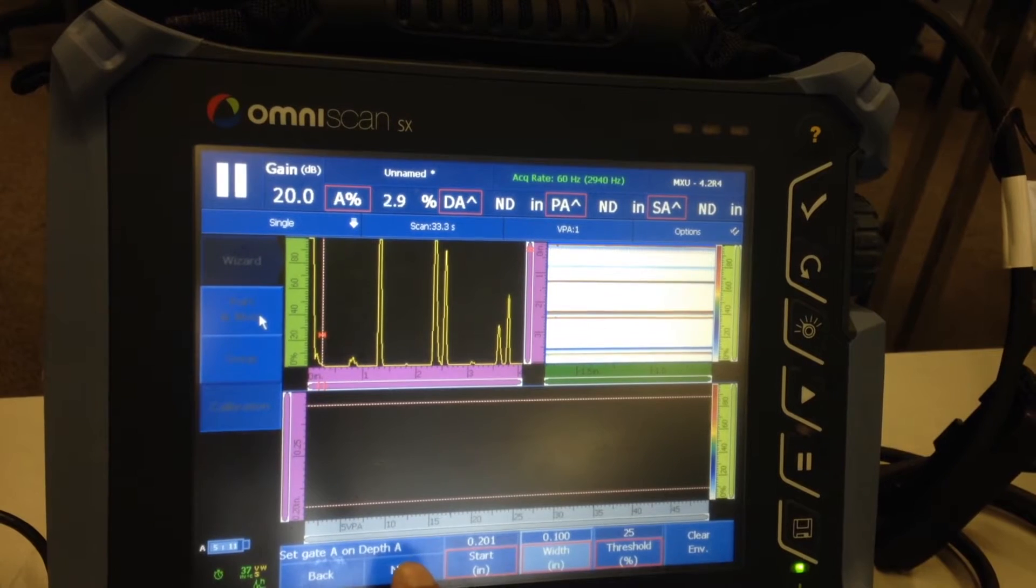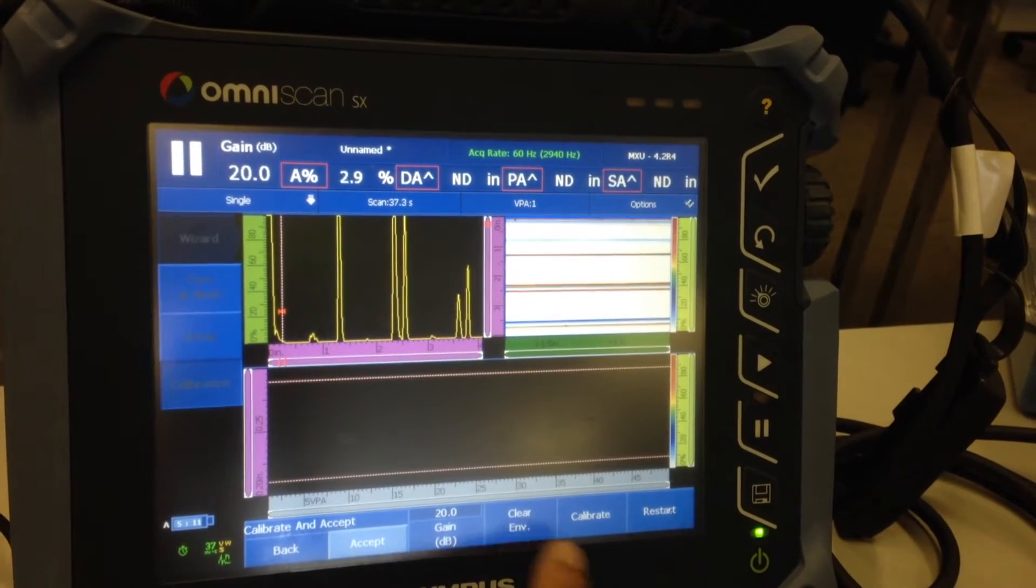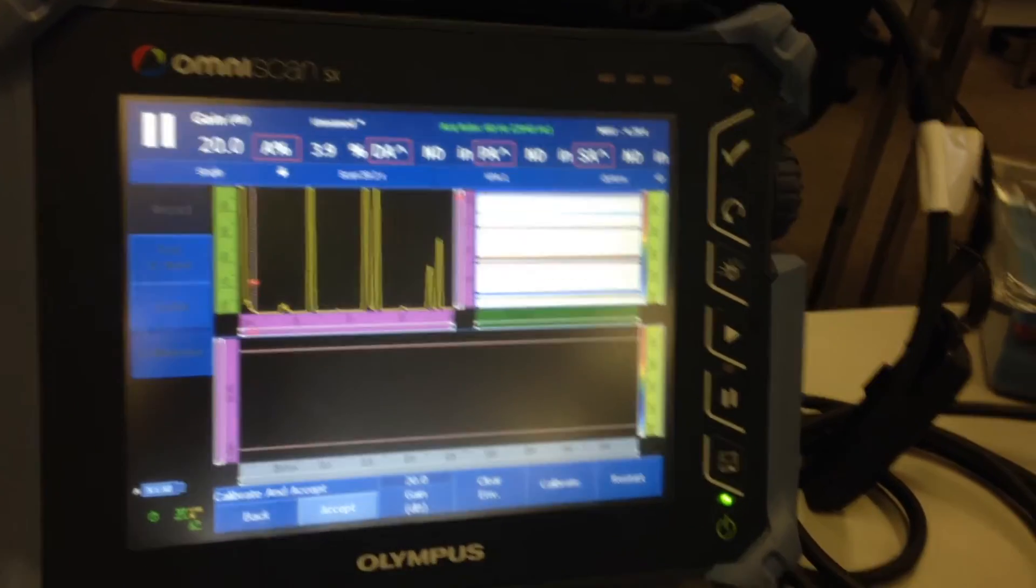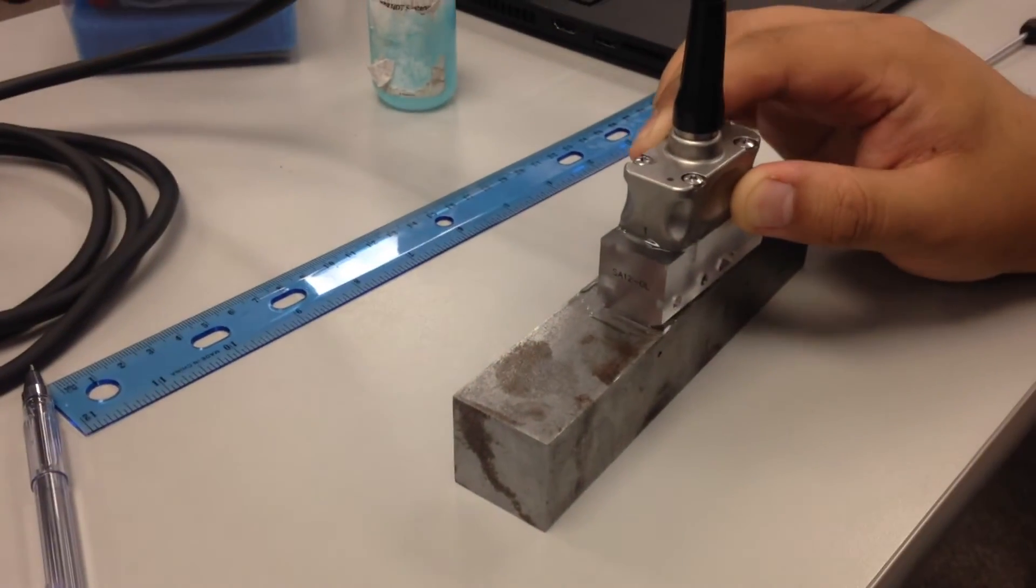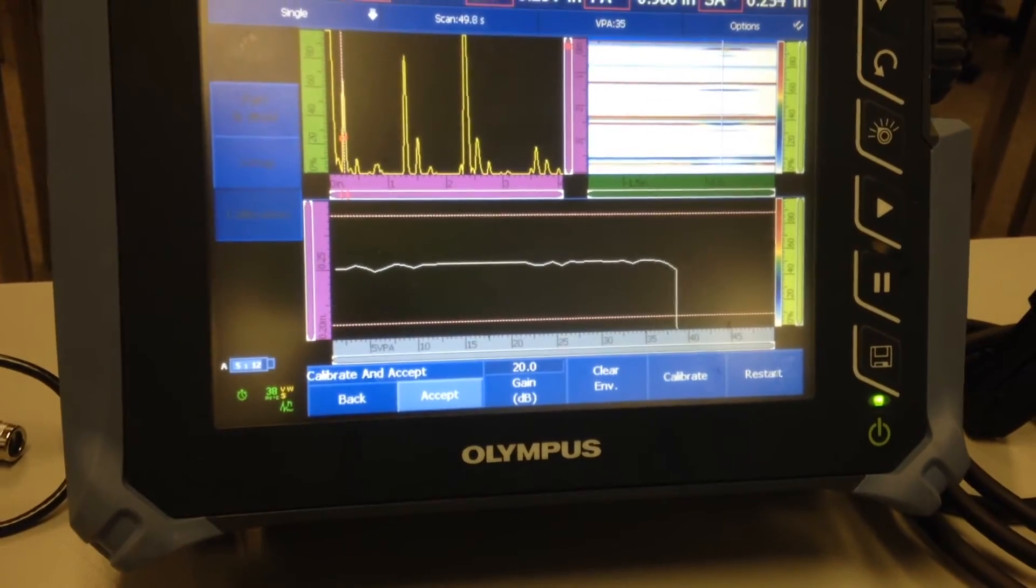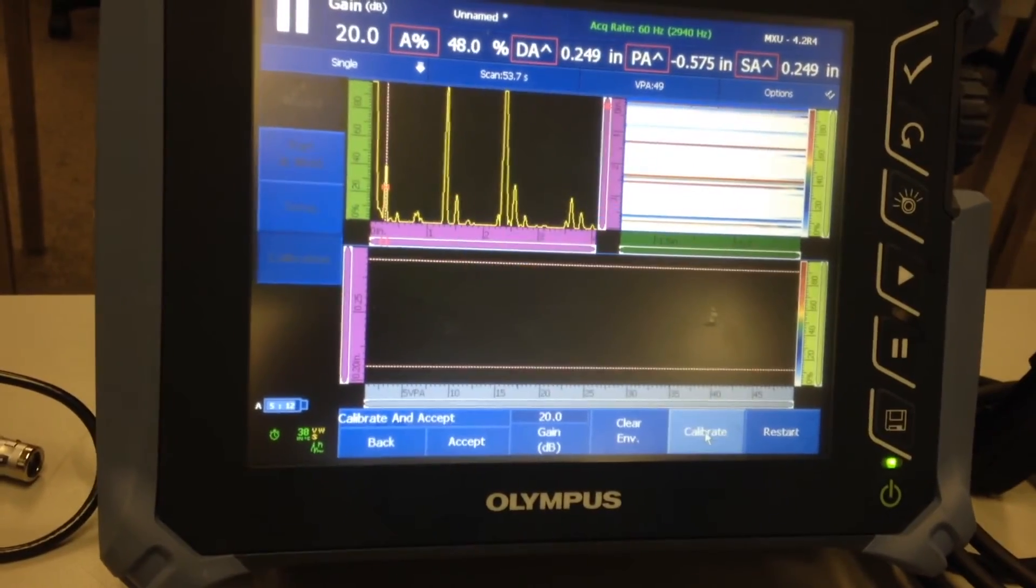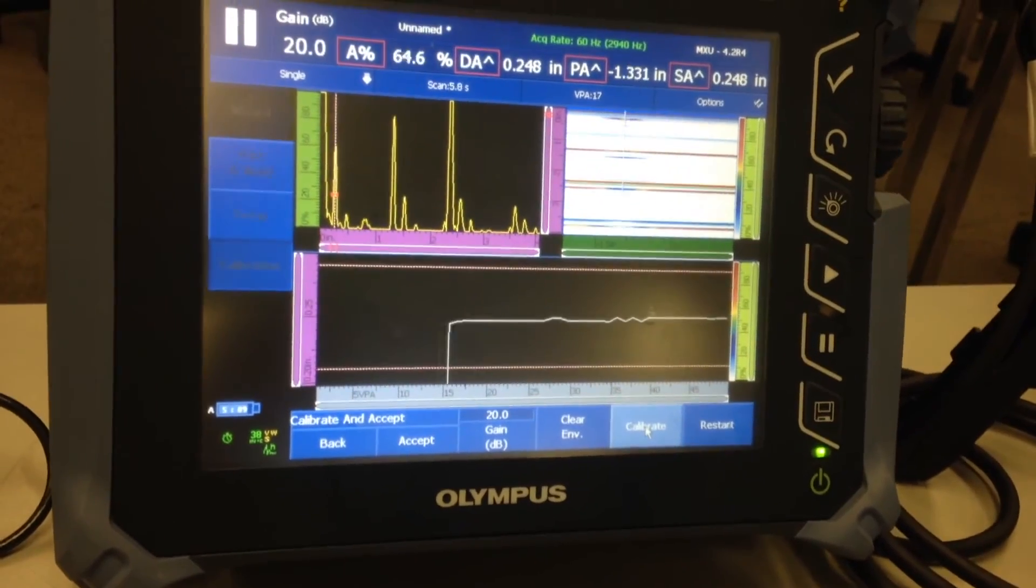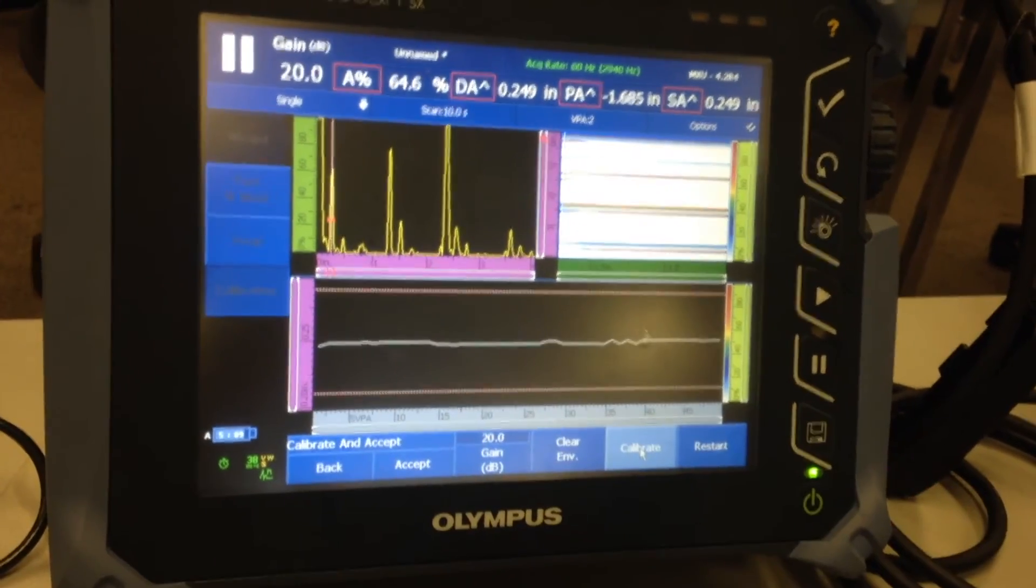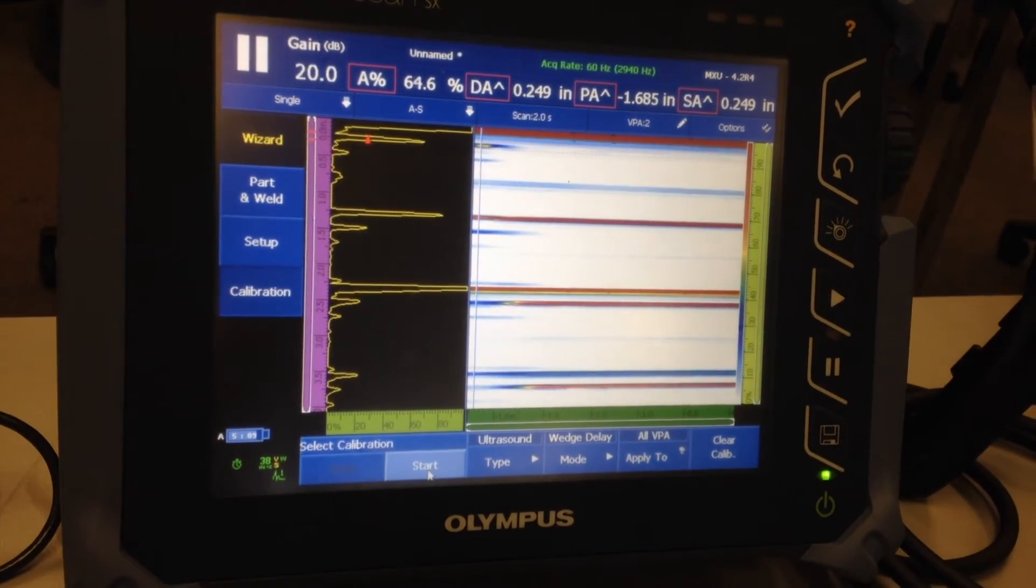So I'm going to start my gate a little before quarter inch and width, which will take it to a little bit after quarter inch, so 0.1. Now my gate is from 0.2 to 0.3. Click next. Once I see my calibrate screen, I'm ready to put some couplant on the calibration block and get a signal from the quarter-inch side drill hole. Once I get that, click calibrate and get a signal again. Once I get a nice straight line, I hit accept. I'm done with my wedge delay calibration.